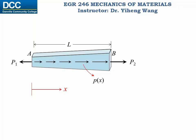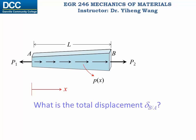In general, for a member subjected to axial loadings, the member is subjected to two concentrated forces P1 and P2, and a distributed force with load intensity Px as a function of location. What is the total deformation of this member under the axial loadings? What is the displacement of point B relative to point A? I will demonstrate how to derive the general formula.